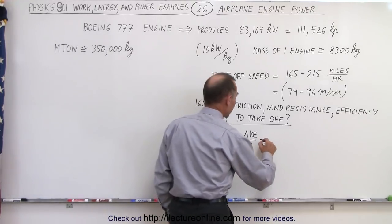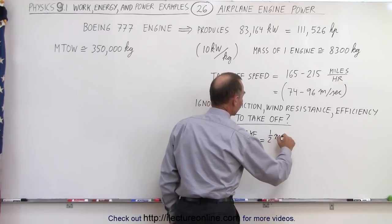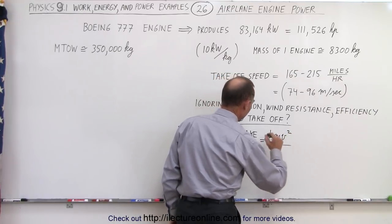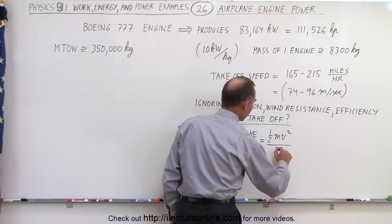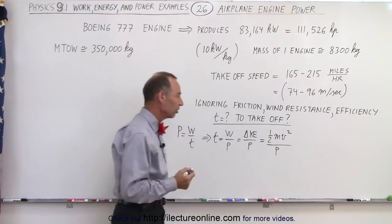The increase in kinetic energy would be equal to one-half the mass times the velocity squared divided by the power of two engines, so that would be two times the power of one engine.